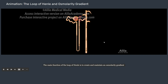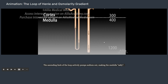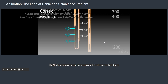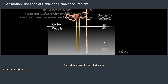The main function of the loop of Henle is to create and maintain an osmolarity gradient in the medulla that enables the collecting ducts to concentrate urine at a later stage. The ascending limb actively pumps sodium out, making the medulla salty. The descending limb is permeable to water but much less so to sodium. As water exits the tubule by osmosis, the filtrate becomes more and more concentrated as it reaches the bottom. The ascending limb, on the other hand, is permeable to ions but not water. As a result, the filtrate loses sodium as it goes up and becomes more diluted at the top of the loop. The medulla is in equilibrium with the loop and hence has the same salinity gradient — saltier at the bottom.